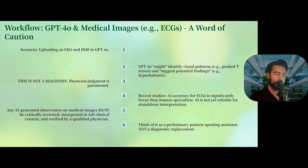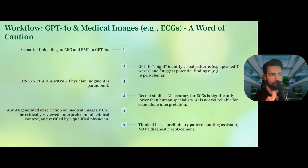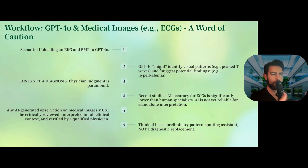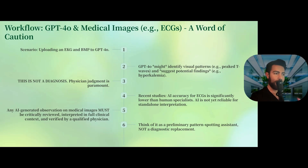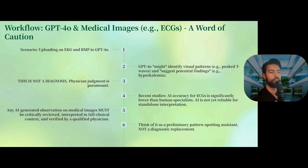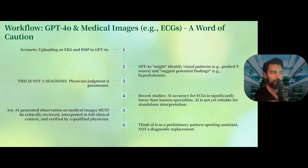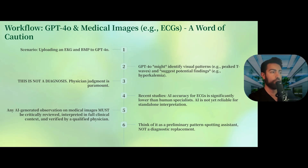For example, with GPT-4o: you're seeing a patient in the ER with chest pain, you get an EKG, you look at it yourself, and then you take a picture and put it into ChatGPT just to see what happens. I've done that — sometimes it can pick up things like peaked T-waves and suggest possible causes — but I've seen it be wrong so many times. There are studies showing that AI accuracy for reading images is very poor compared to human specialists. Do not use this as a standalone interpretation.